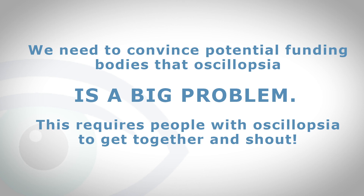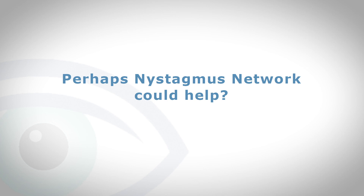To persuade funding bodies — particularly the National Institute for Health Research, NIHR — to give us money requires that they perceive the project as being worthy of funding. What we need is to convince them that oscillopsia is a really big problem. This requires people with oscillopsia to get together and make some noise. I was wondering whether the Nystagmus Network could help — if all members with acquired nystagmus could form a group to emphasize the problems of oscillopsia, it might be very useful and might help us get funding. And that's the end of my talk — I understand there might be some questions, so over to you.